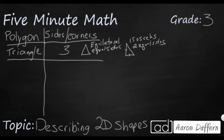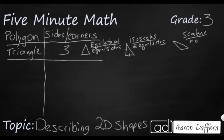The isosceles has two equal sides — in this case, this one and this one. And then finally, if I were to draw something that's just a little bit strange, that's what we call a scalene triangle. So these are three terms we need to know: scalene, isosceles, and equilateral. Scalene has no equal sides.